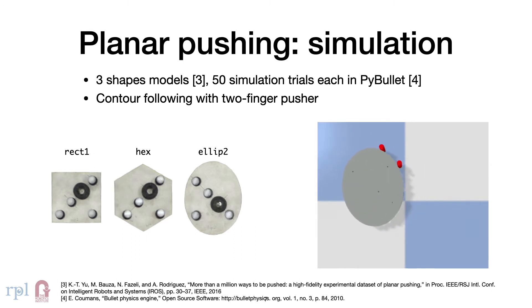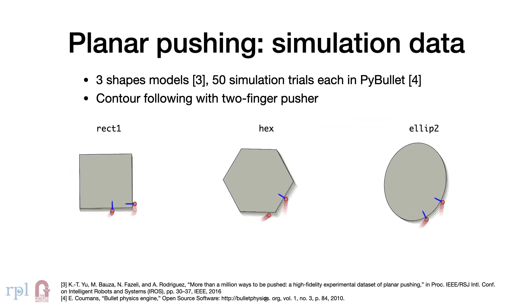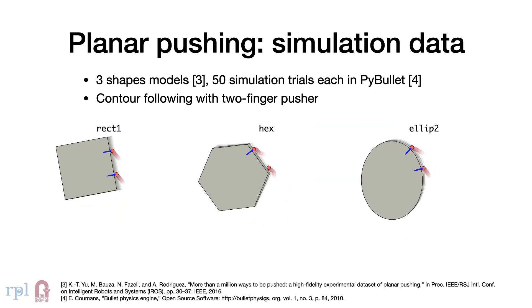We collect 50 trials each for three shaped objects with Gaussian noise. These are some examples of the contour-following trials we collect.